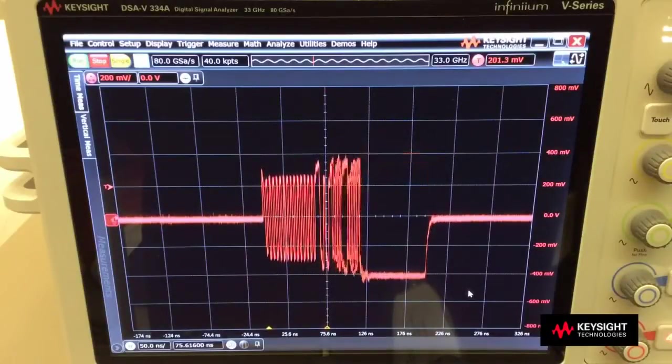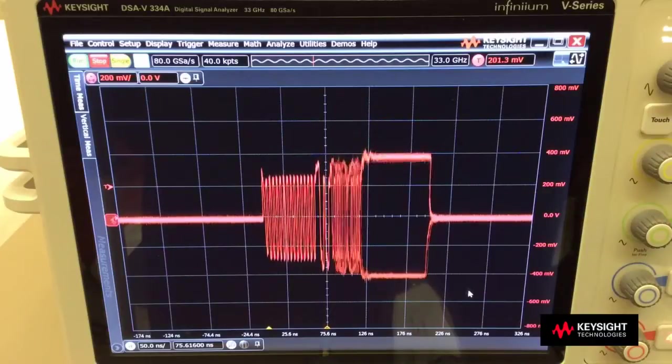The third customer need that the V-Series addresses is to provide the Infinimode feature, which is the ability to make differential, single ended, and common mode measurement using one probe tip without reconnecting the signal. So the Infinimax 3 probing solution will provide the Infinimode capability up to 20 GHz of bandwidth.